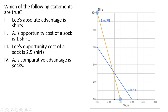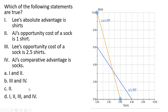Statement 4: AJ's comparative advantage is in socks. We're looking for the low opportunity cost producer of socks. As we determined, AJ's opportunity cost of a sock is one shirt, which is less than 2.5 shirts. So AJ does have a comparative advantage in socks. All these statements are true, so the correct answer is D — statements 1, 2, 3, and 4.